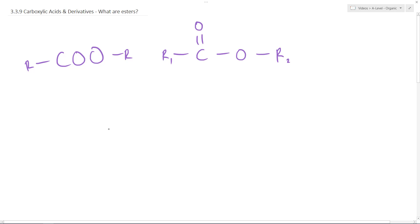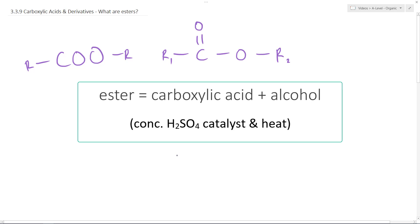So esters themselves, they are the love child of a carboxylic acid and an alcohol. To make them, you literally add a carboxylic acid and an alcohol together with a little bit of concentrated sulphuric acid catalyst, a little bit of heat there, and the magic happens and an ester is born.